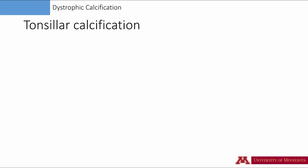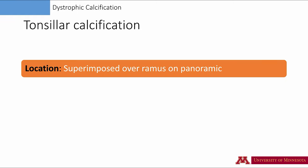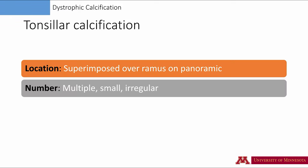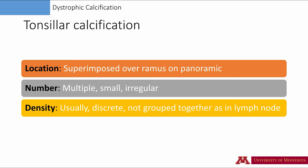Let's review tonsillar calcifications. Again, the location is critical for diagnosis. The tonsillar calcifications can be superimposed over the ramus on a panoramic radiograph. Some of these calcifications are located distal of the ramus. On the CBCT scan, we'll see the calcifications on the lingual aspect of the ramus. Lymph node calcifications were near the angle of the mandible, while tonsillar calcifications are superimposed over the ramus of the mandible. Similar to a lymph node calcification, the tonsillar calcifications are also multiple, but these are irregular in size and discrete. Unlike lymph node calcifications, tonsillar calcifications are not grouped together.